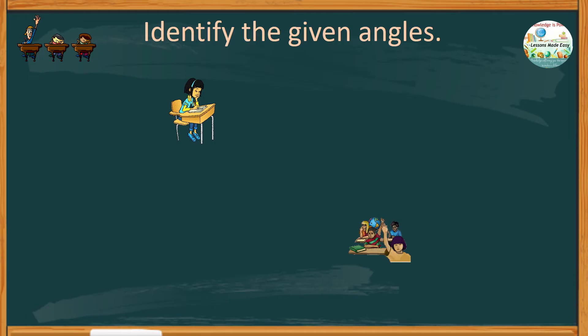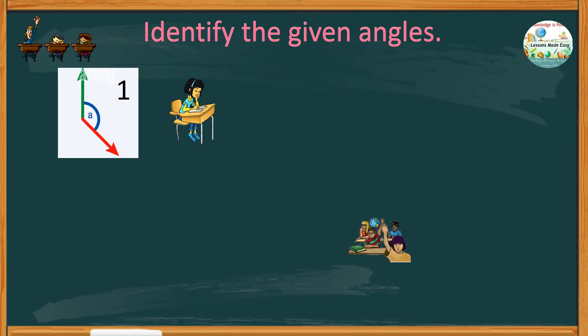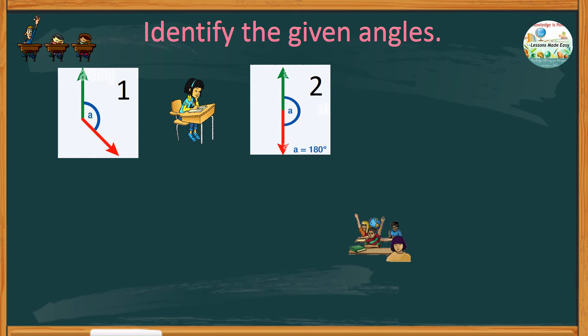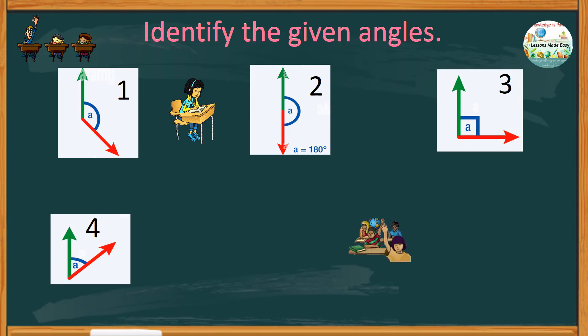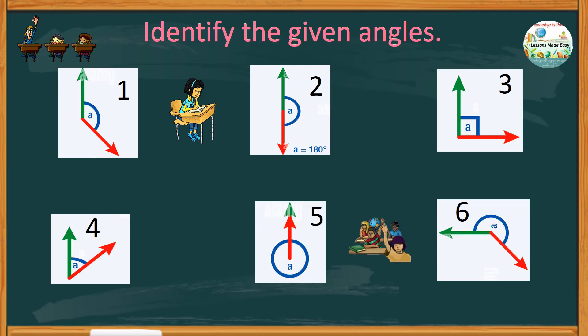Before we finally end this lesson, let's try to identify the given angles. Let's see how well you can tell what type of an angle each figure represents. Here is angle 1, angle 2, angle 3, angle 4, angle 5, and angle 6. Take a moment to study the figure, and you can always pause this video should you need more time.